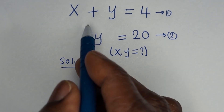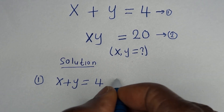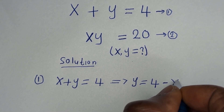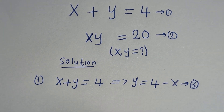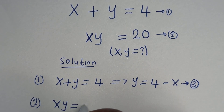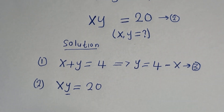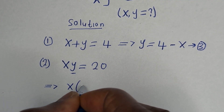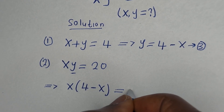From equation 1, x plus y is equal to 4 — let us call this equation 1. xy is equal to 20 — let us call this equation 2. From equation 1, x plus y is equal to 4, then y is equal to 4 minus x — let us call this equation 3.